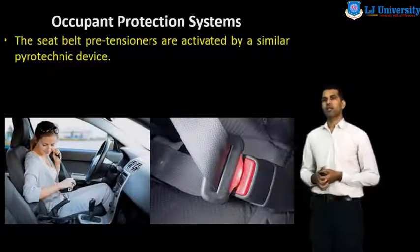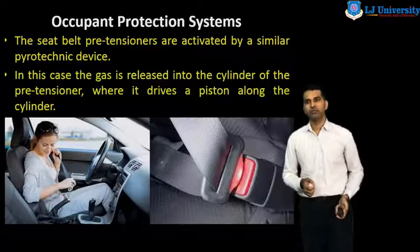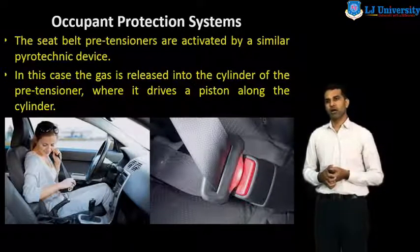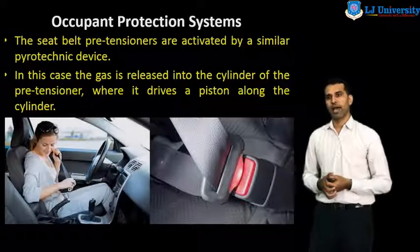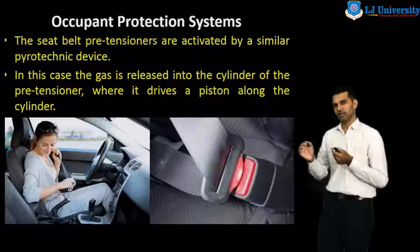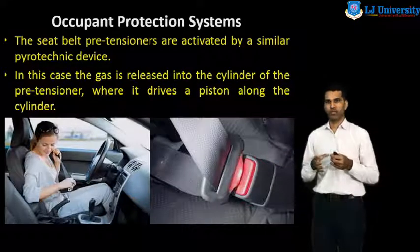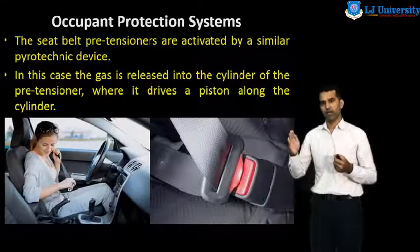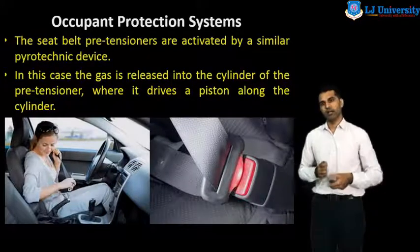The seat belt pretensioners are activated by a similar pyrotechnic device. In this case, the gas is released into the chamber of the pretensioner where it drives a piston along a cylinder. When the gas is released, the pressure causes the piston to move, and when the piston moves, the reel rotates in the opposite direction.